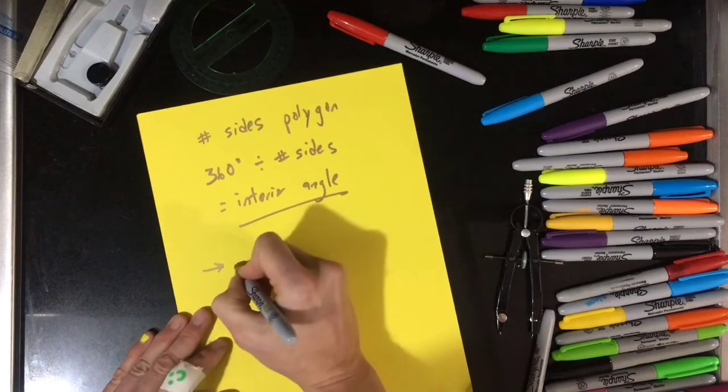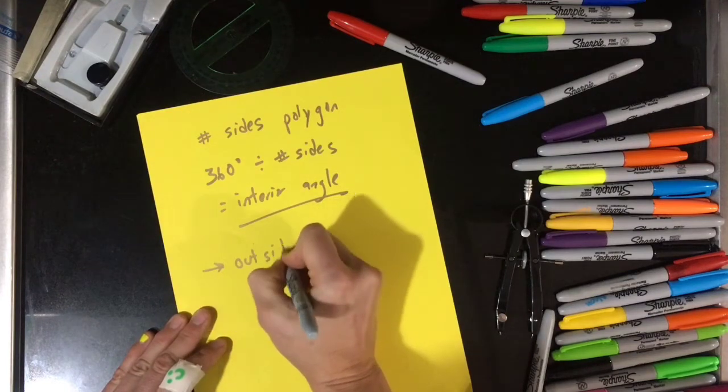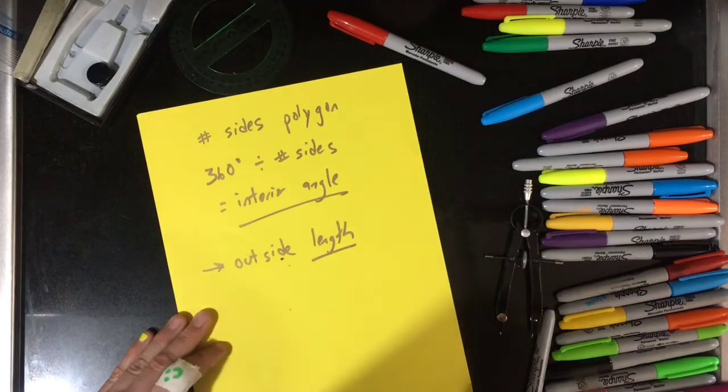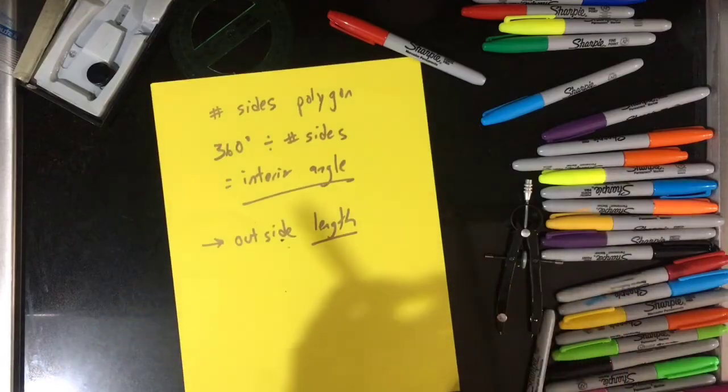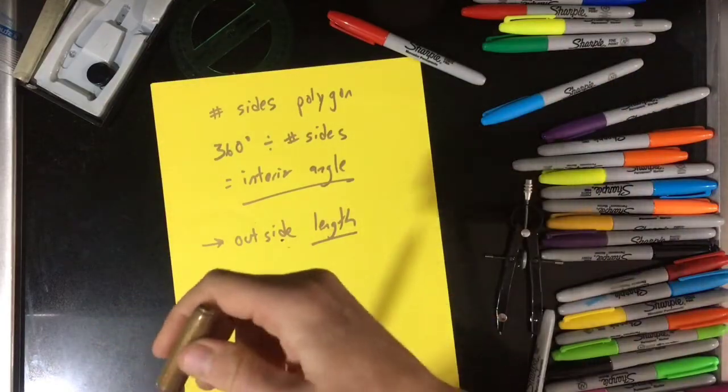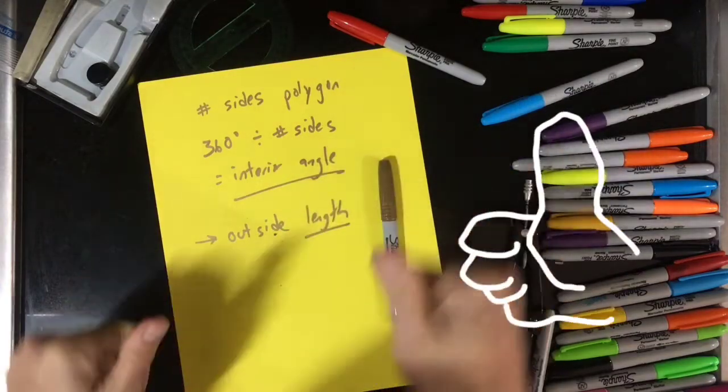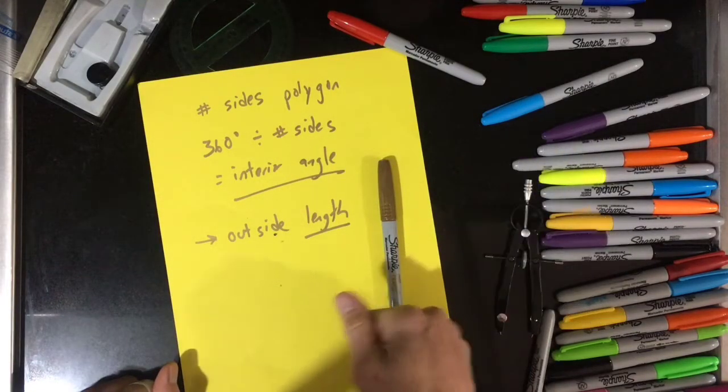This will give you the interior angle that you have to measure inside of the circle. Then you measure the outside length that you will be using for each side of the polygon. That's all. So thank you for watching, give me a thumbs up. Let me know what other videos you want to see. So bye!